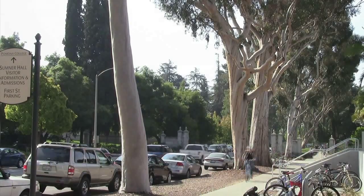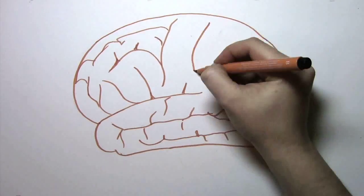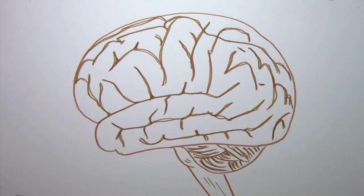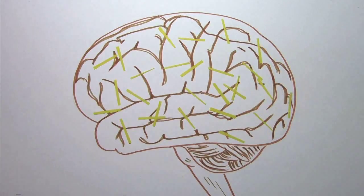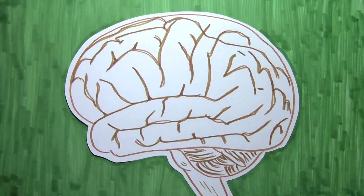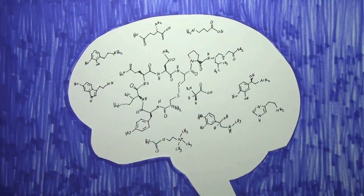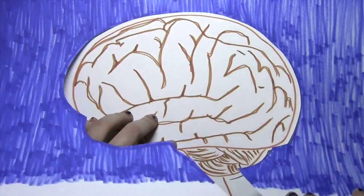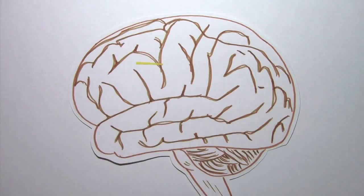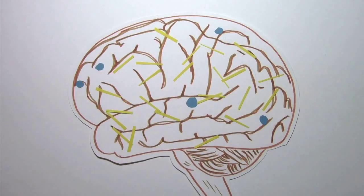But why does any of this matter in the first place? Life as we know it is nothing more than our brain's chemical and electrical interpretation of the signals it receives. Your eyes respond to light, your ears to sound waves, your nose to chemicals in the air, but your brain only responds to a converted electrical signal that it receives from your senses.